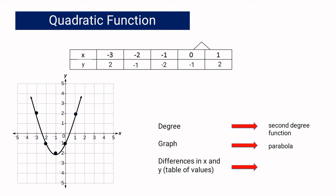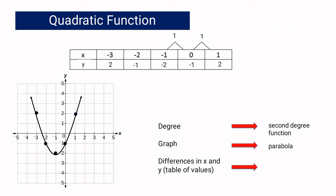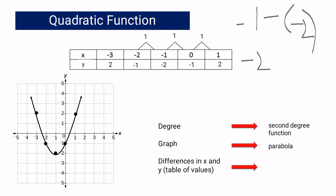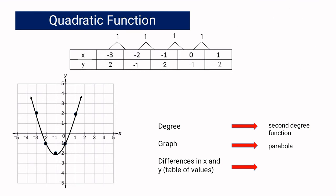Let us get the differences in x: 1 minus 0 is 1; 0 minus negative 1 is 1; negative 1 minus negative 2 is 1; and negative 2 minus negative 3 is also 1. So, just like in a linear function, we have equal first differences in x.